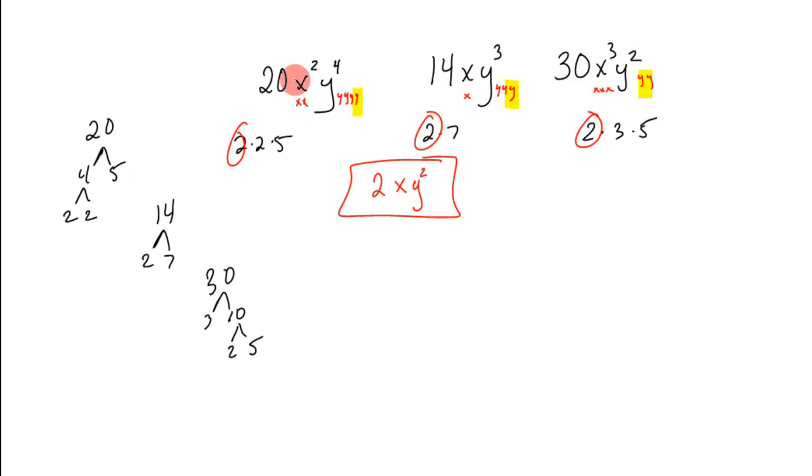So when I look at the x. There's one x. Two x's. Three x's. One x in common. Four y's. Three y's. Two y's. Two y's in common. GCF.